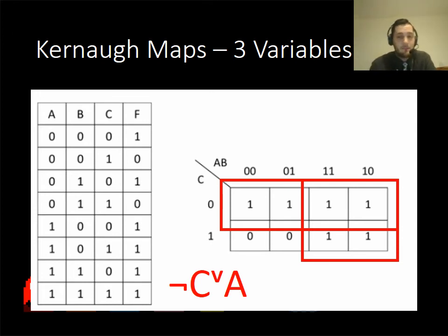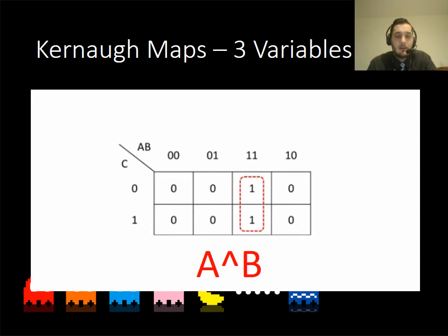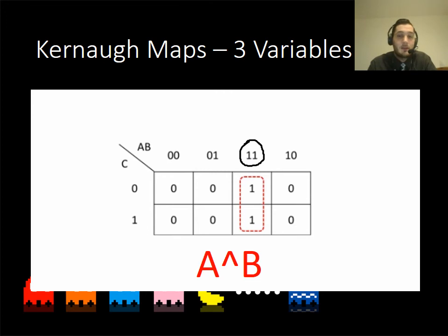This one is slightly different — you've seen bigger groups before, but this pattern is separate. We've got A AND B here, because both inputs A and B must be turned on in order for the output to be true.